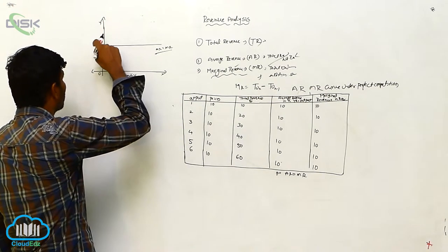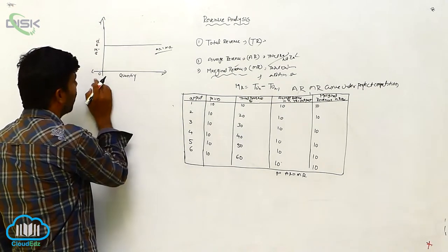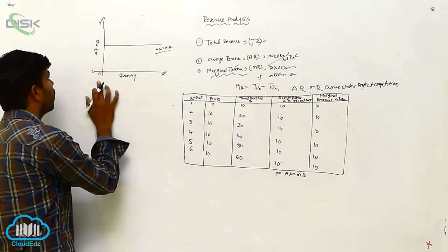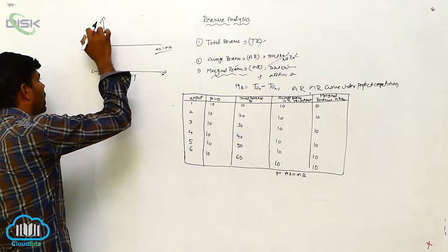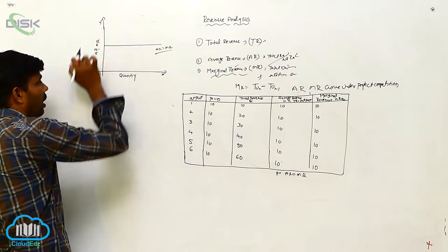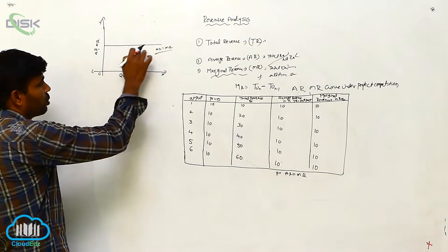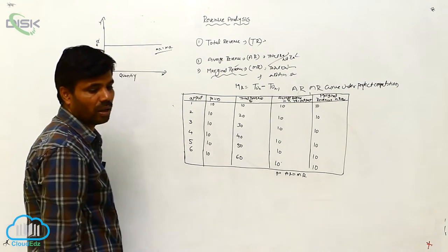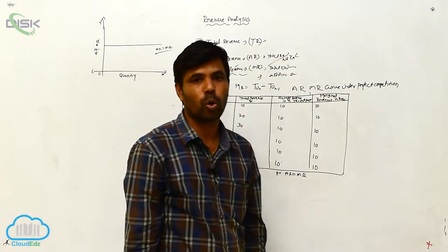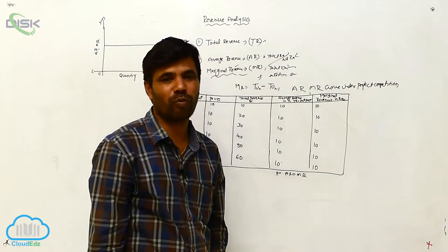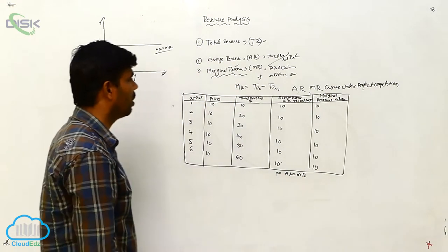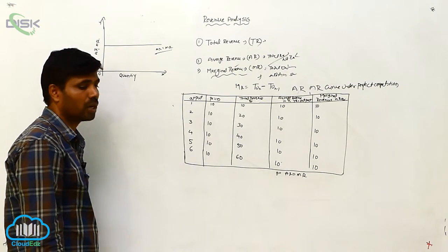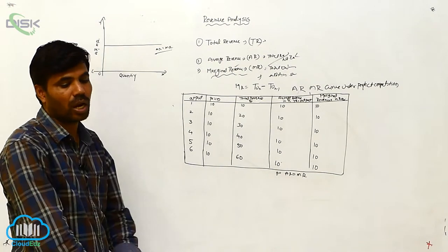So here on the O-X axis we are going to consider A, R and M, R. We are going to consider quantity O-A on the X axis. We are going to consider A, R and M, R — the line going to this here with this slope. We can show that there is no rigidity, there is no fluctuation under perfect competition. The A, R and M, R curves are shown here.